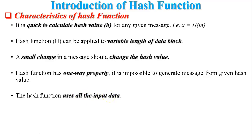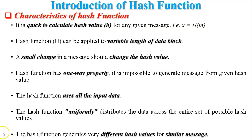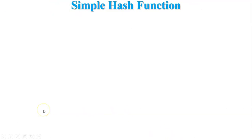Fifth, the hash function uses all the input data — if all input data is not used, it may generate the same hash value, causing weak or strong collision. Sixth, the hash function uniformly distributes data across the entire set of possible hash values — if not uniformly distributed, weak or strong collisions may occur. Seventh, the hash function generates very different hash values for similar messages — even if both messages are similar, the hash values should be different.